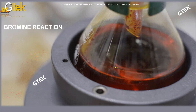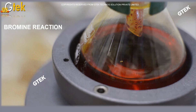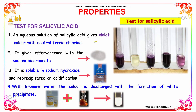This is a reaction of salicylic acid with bromine. Test for salicylic acid: an aqueous solution of salicylic acid gives violet color with neutral ferric chloride. It gives effervescence with sodium bicarbonate. It is soluble in sodium hydroxide and re-precipitated on acidification. With bromine water, the color is discharged with the formation of white precipitate.